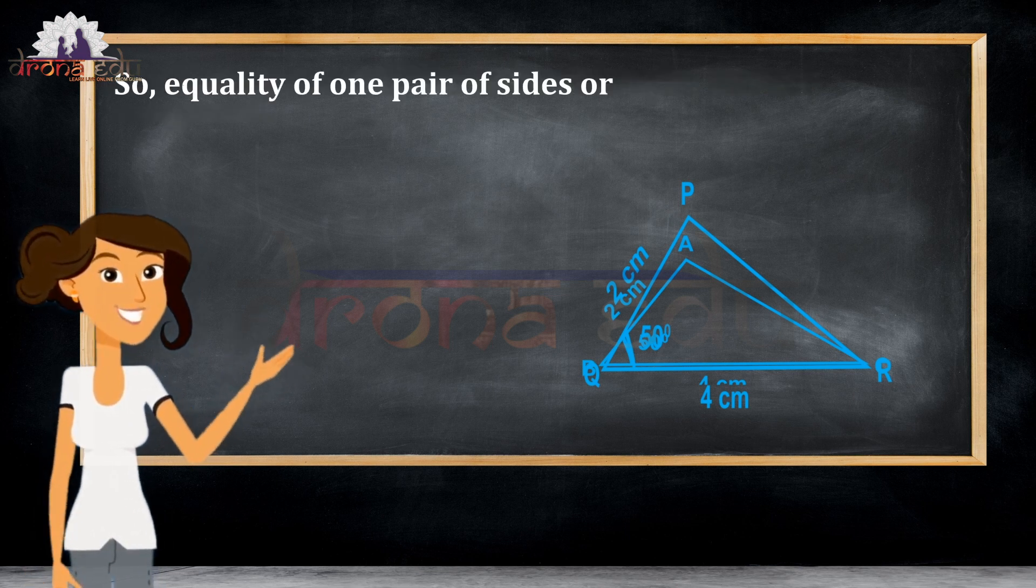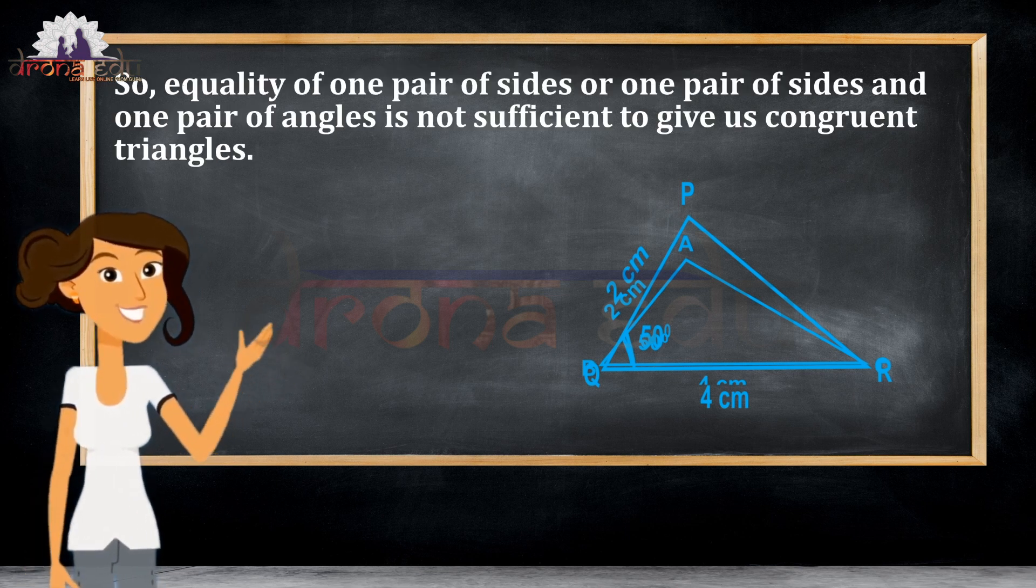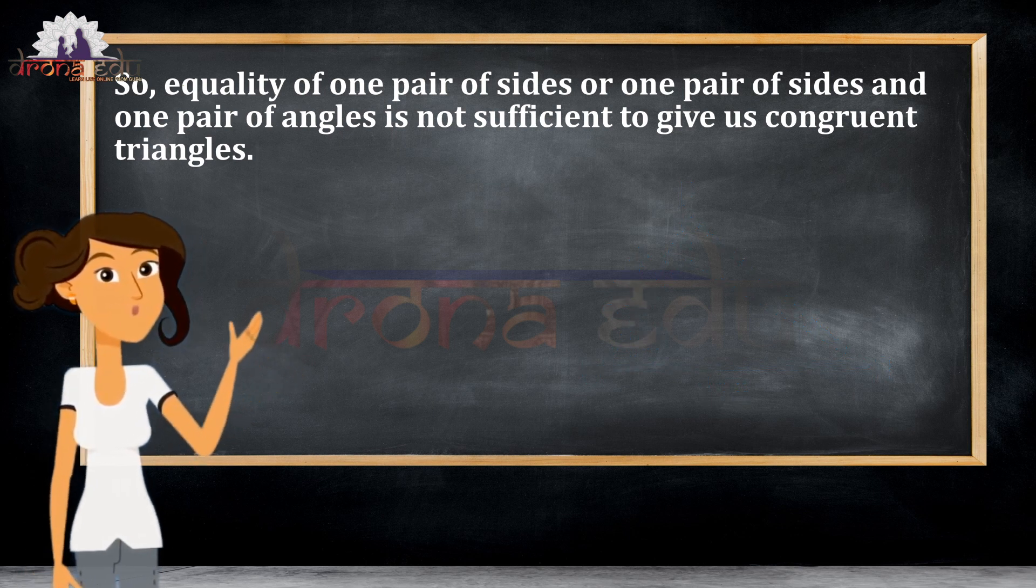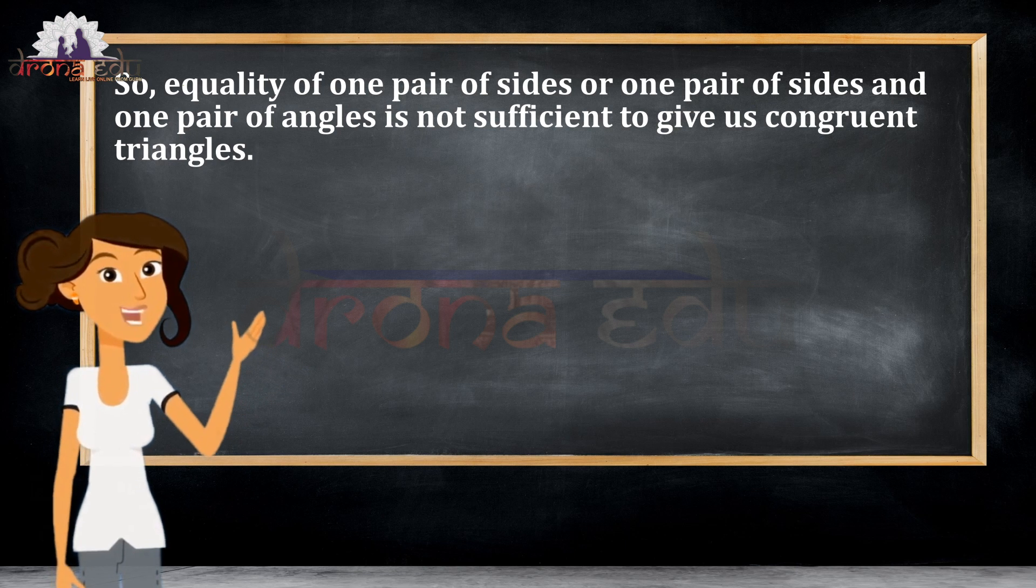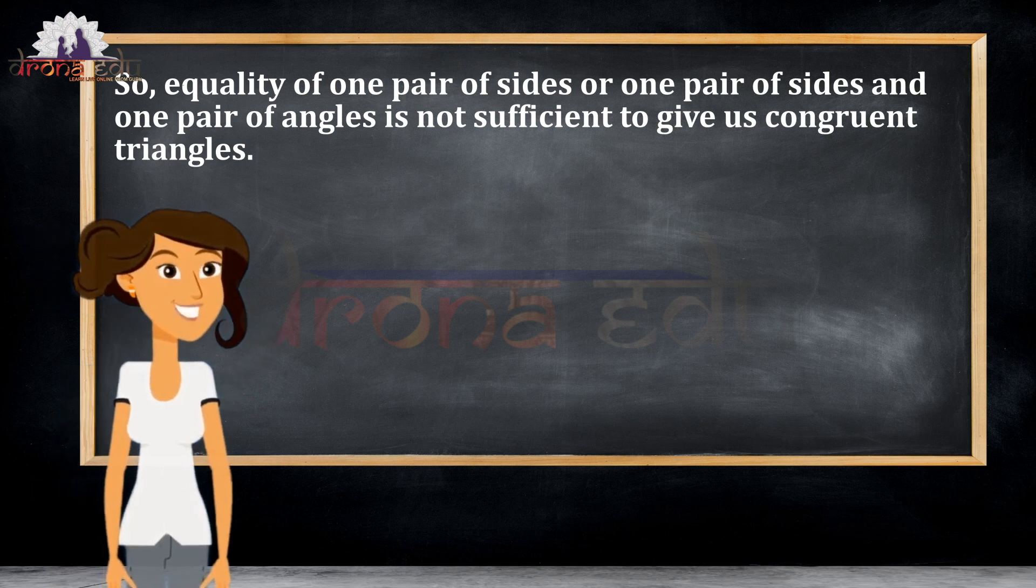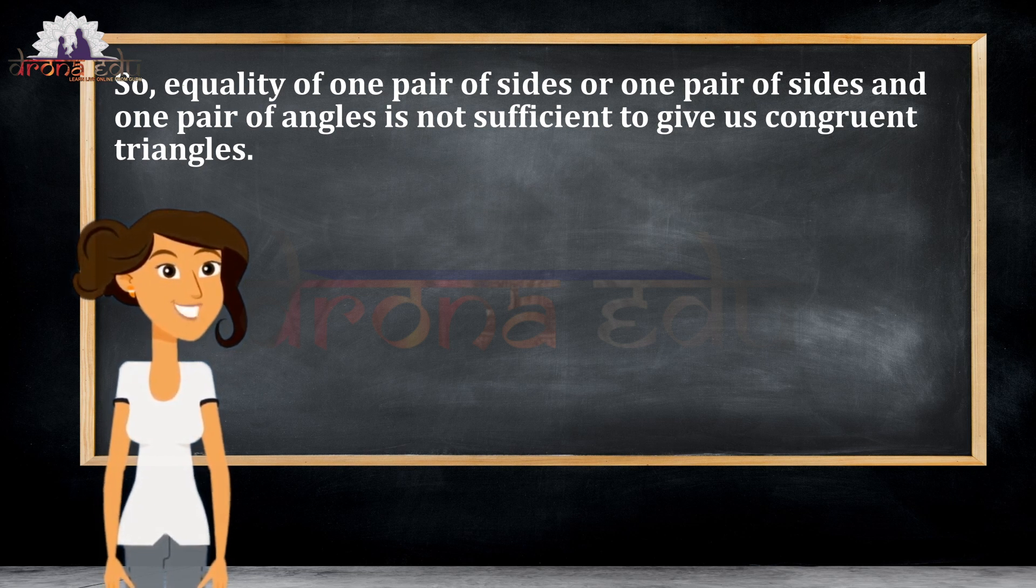From this example, I can say that the equality of one pair of sides, or one pair of sides and one pair of angles, is not sufficient to give us congruent triangles.